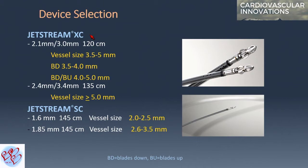It comes in two different versions: the XC, or expandable cutter, and the SC, which is a single cutter. The expandable cutter is 2.1 blade down and 3.0 blade up, in two sizes: 2.1 and 2.4. The majority of the time we use the 2.4/3.4 for fempop lesions, as vessel size is typically 5 millimeters or higher. The JetStream SC is typically used for tibial vessels where vessel size must be over 2 millimeters.